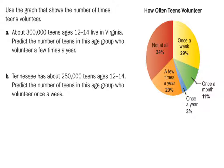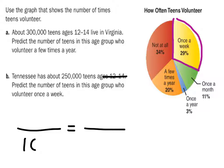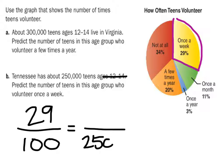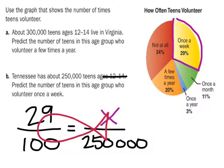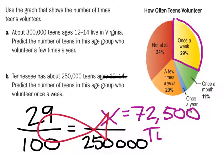The second question is about Tennessee, using the same pie chart. Predict the number of teens who volunteer once a week — that slice is 29%. There are 250,000 total teens in Tennessee. Using the fishy method: 250,000 times 29 divided by 100 equals 72,500 teens from Tennessee who volunteer once a week.